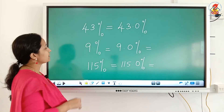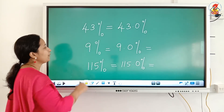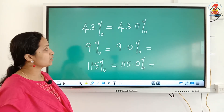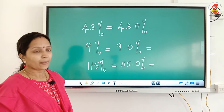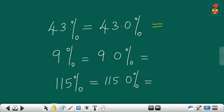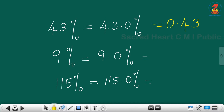Let us look at some more examples. 43 percent is the same as 43.0 percent. Just drop the percentage sign and move the decimal point 2 places to the left side. The answer is 0.43.